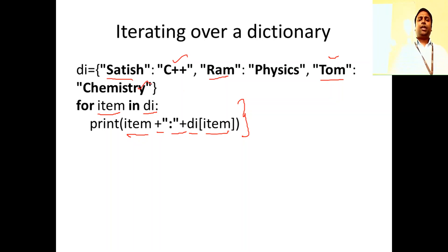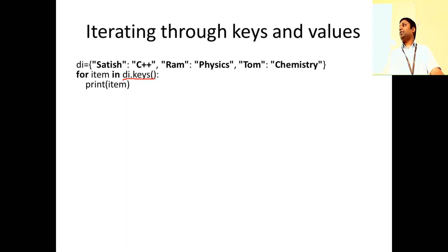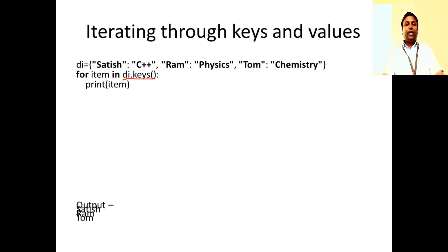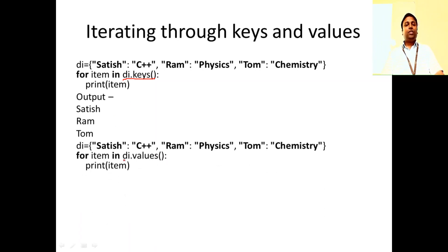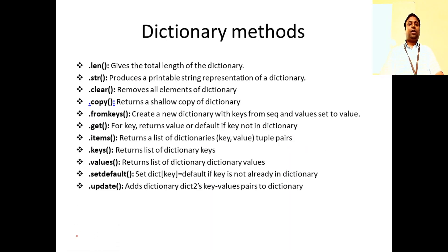You can also iterate using keys and values. 'di.keys' fetches only keys, so 'for item in di.keys' iterates over the keys. Similarly, 'for item in di.values' fetches only the values, so you can work only on the values of a dictionary. These are the iteration approaches.